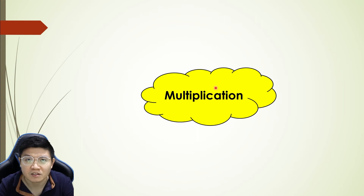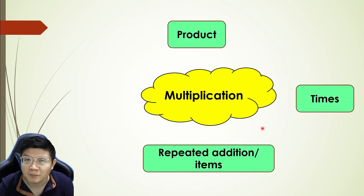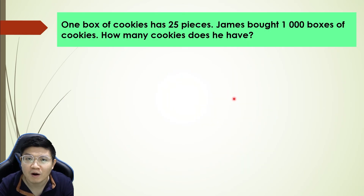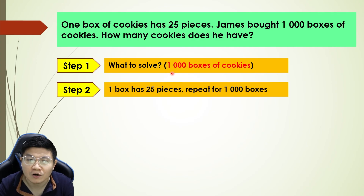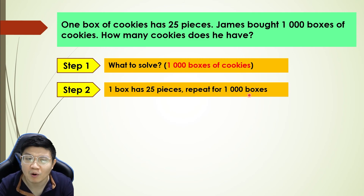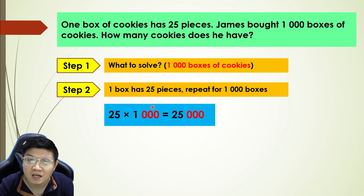Next: keywords related to multiplication. Common keywords include product, times, repeated addition, and items. Here is an example: one box of cookies has 25 pieces. James bought 1000 boxes. How many cookies does he have? Step one — find the total cookies. Step two — one box contains 25 pieces and James bought 1000 boxes, so we multiply 25 by 1000. That is repeated for 1000 boxes, giving 25,000 pieces of cookies.